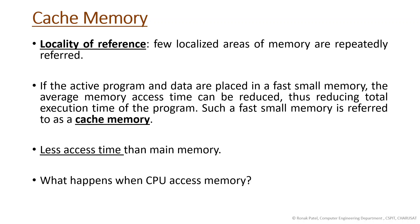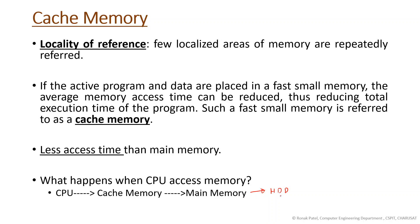When the CPU accesses memory, it first accesses the cache memory. If data is found in cache memory, it takes data from there. If data is not found in cache memory, it searches main memory. If data is not in main memory, it goes to the hard disk. So some portion is in main memory, a copy of that is in cache memory, and the CPU accesses it from there.